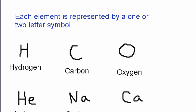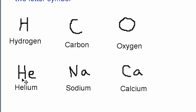If you look at the periodic table, you'll notice that every single element is represented by one or two letters — that's the symbol of the element. Examples of one-letter symbols: H stands for hydrogen, C stands for carbon, and O stands for oxygen. Examples of two-letter symbols: helium is HE, sodium is NA, and calcium is CA. The first letter of the element is always capitalized, and the second letter is always lowercase. There are some elements represented by three letters, but they're very rare and you likely won't use them in your chemistry course.